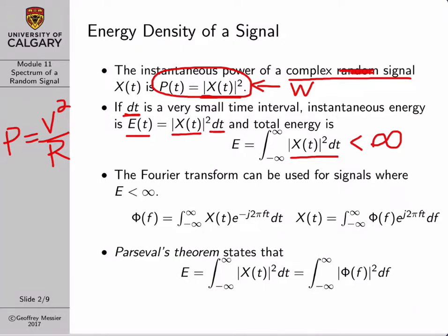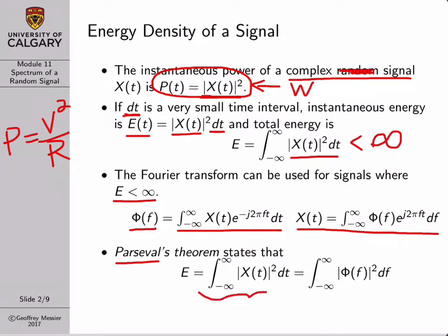For now, let's assume we're dealing with a finite energy signal where total energy is less than infinity. If we are, then we can define the Fourier transform pair: the frequency spectrum Φ(f) is just the Fourier transform of x(t), and we can recover x(t) from the inverse Fourier transform of its spectrum. Since we're dealing with concepts of energy and power, an important theorem to mention is Parseval's theorem, which states that the total energy of the signal—the integral of the magnitude squared in the time domain—equals the integral of the magnitude squared of the signal spectrum in the frequency domain.